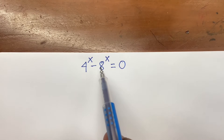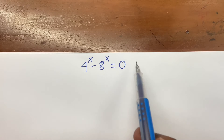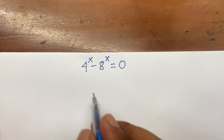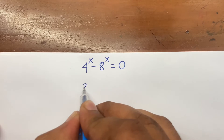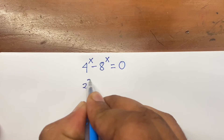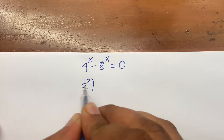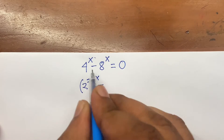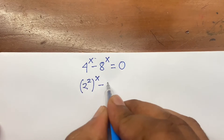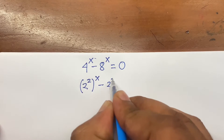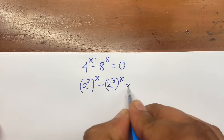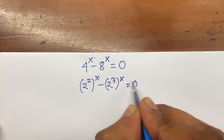How to solve 4 power x minus 8 power x is equal to 0? Find the value of x. We rewrite 4 as 2 to the power 2, bracket power x, minus 8 as 2 to the power 3, bracket power x, is equal to 0.